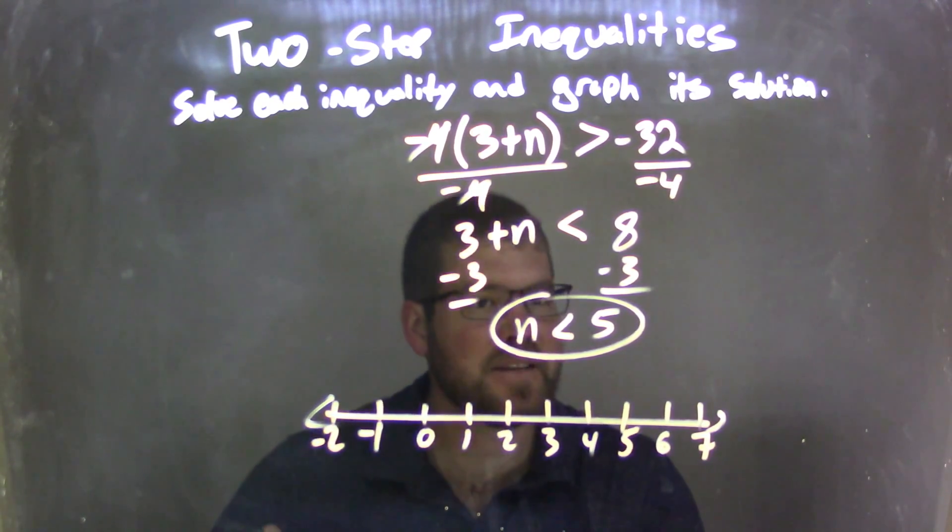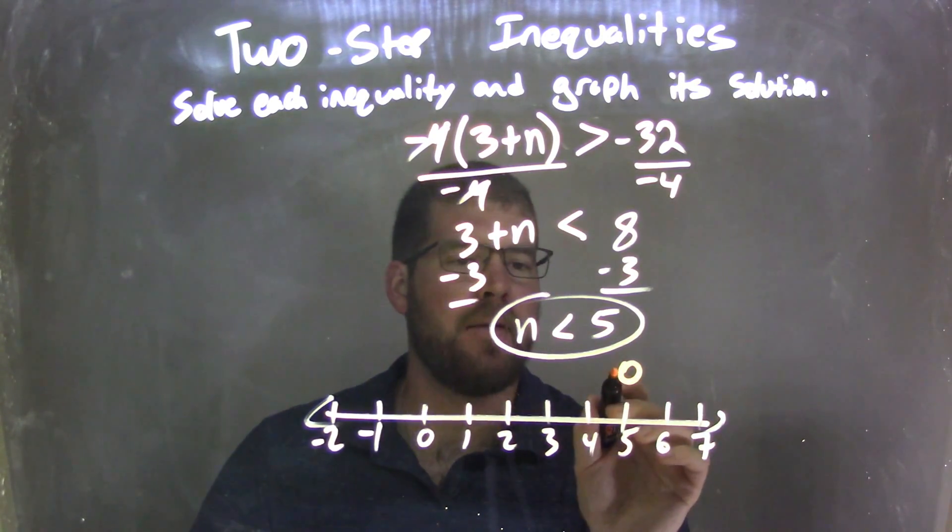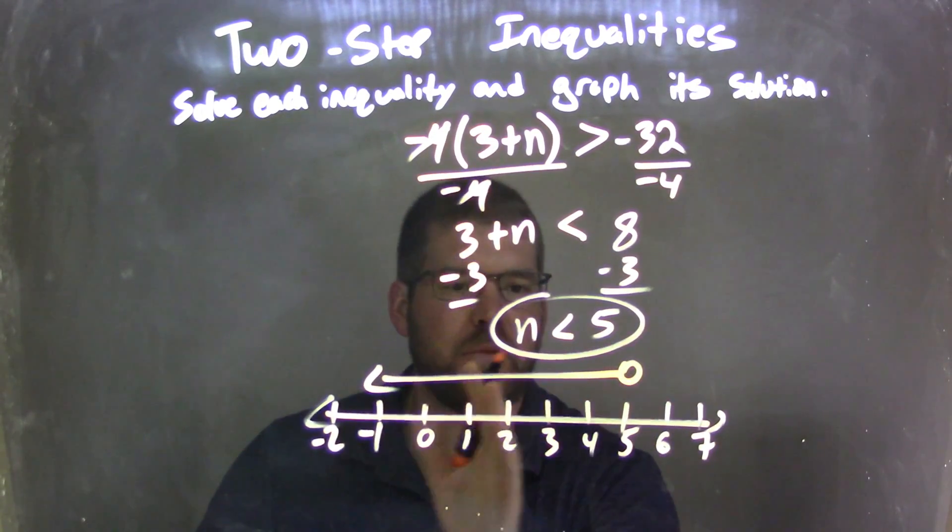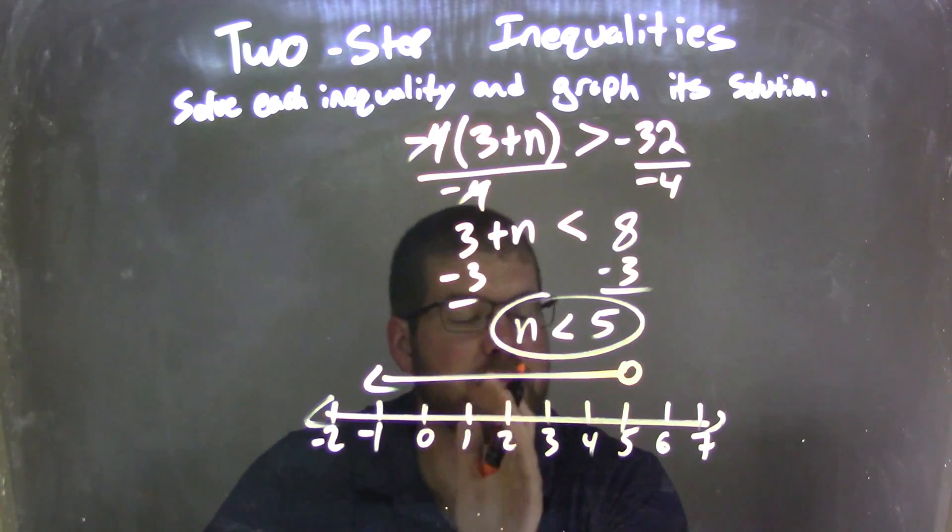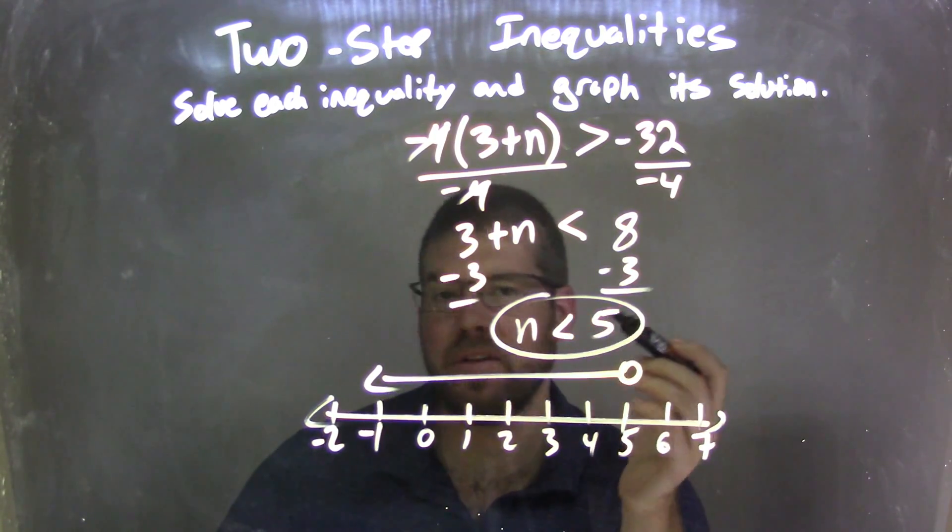Since n is less than 5, we have an open circle because it's not equal to 5, just less than. And we draw an arrow to the left, showing all the values where n can be, all the values that are less than 5. So our graph now matches our inequality of n is less than 5.